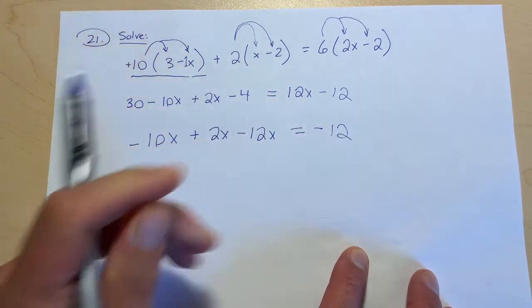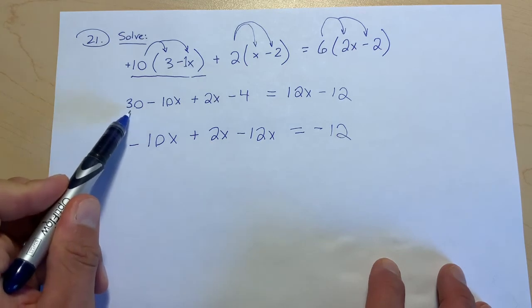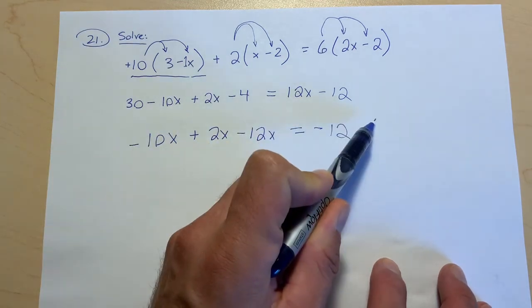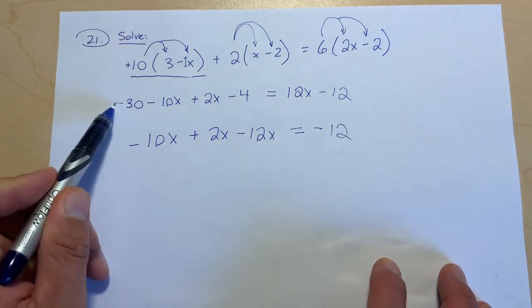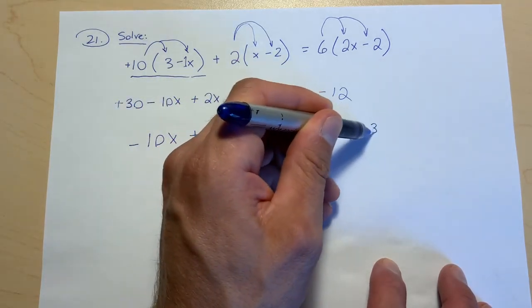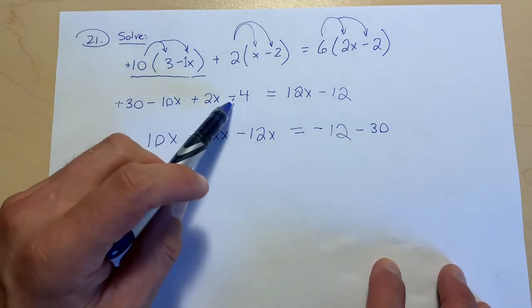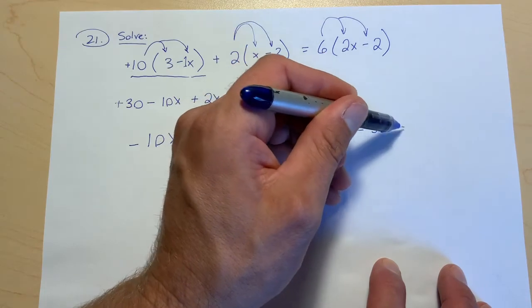All of our x's are there. Equal sign. What's here already is negative 12, and then the other numbers. This 30 we're going to bring it over here. We're assuming it's positive, and when it comes over it's going to become negative 30. And then the 4 is negative here, so when it comes over it's going to become positive.